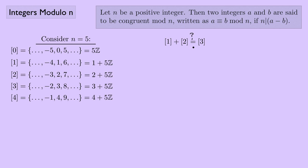To interpret this, I'll take a representative from the equivalence class of 1 — I'll pick 6 — and a representative from the class of 2 — I'll pick 7. Does 6 plus 7 equal [3]? Well, 6 plus 7 is 13, and 13 ≡ 3 (mod 5). So we can write: 6 mod 5 plus 7 mod 5 equals 3 mod 5.